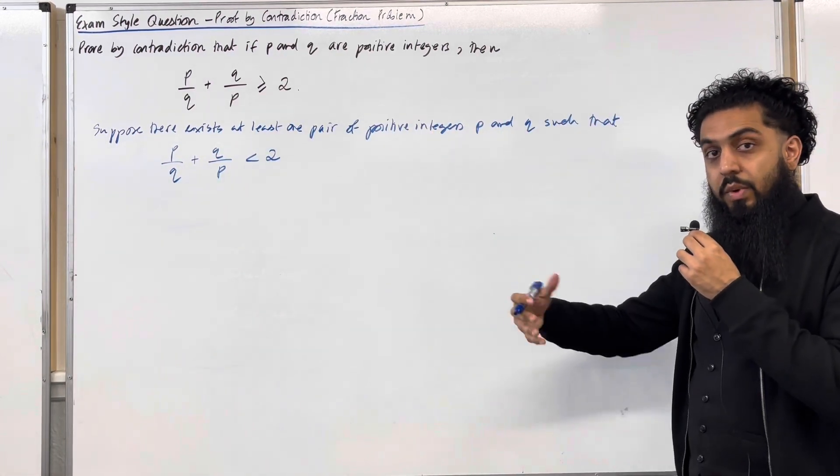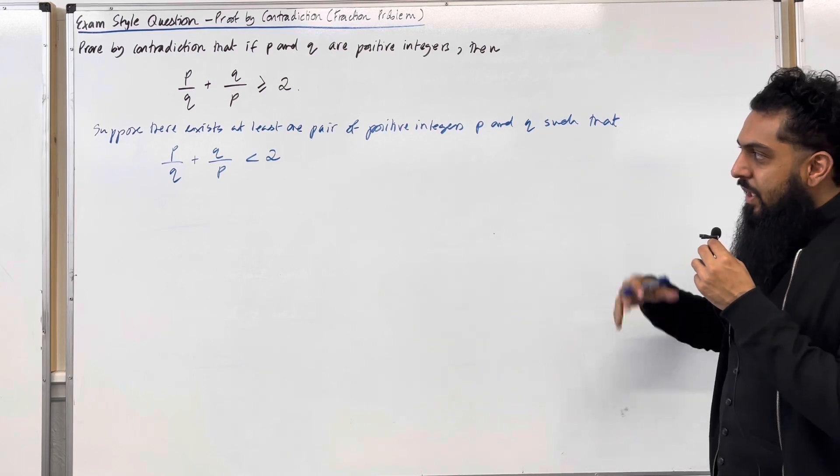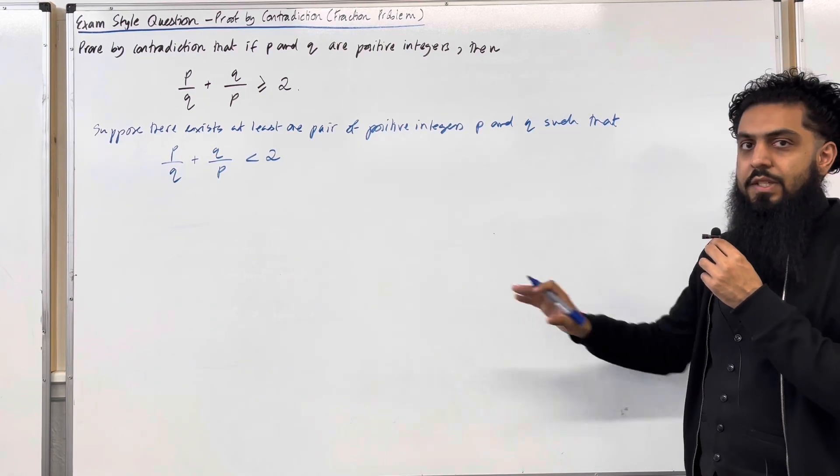So now we need to continue with the proof. We need to trust the process. Continue with the proof, use some creativity until we arrive at a contradiction.